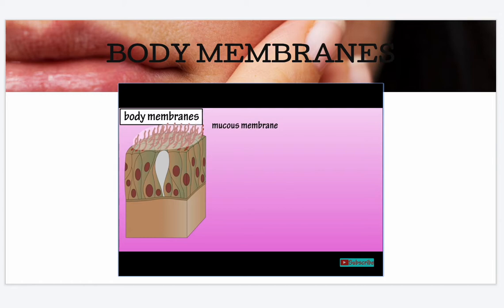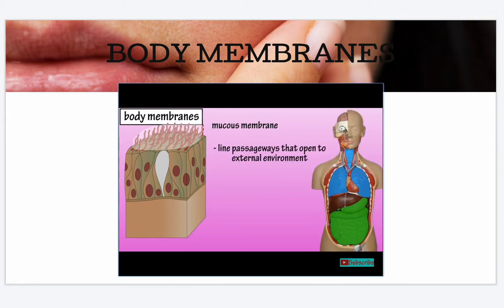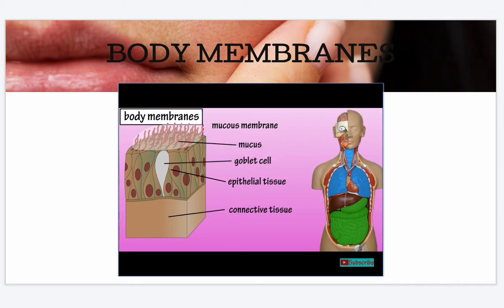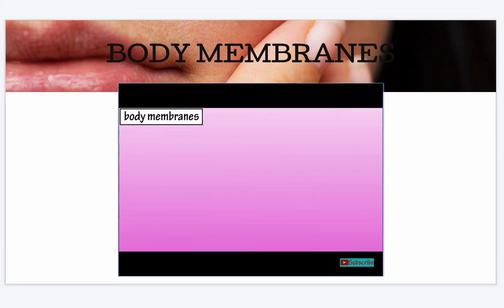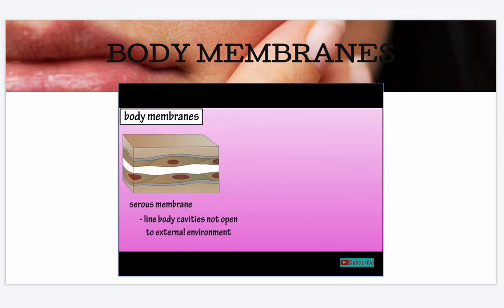Mucus membranes line many passageways that open up to the external environment. Mucus membranes are also composed of epithelial and connective tissue. In many areas of the body, these membranes are covered with mucus secreted by goblet cells that are part of the epithelial layer. Mucus membranes line the digestive tract, respiratory tract, and urinary and reproductive tracts.